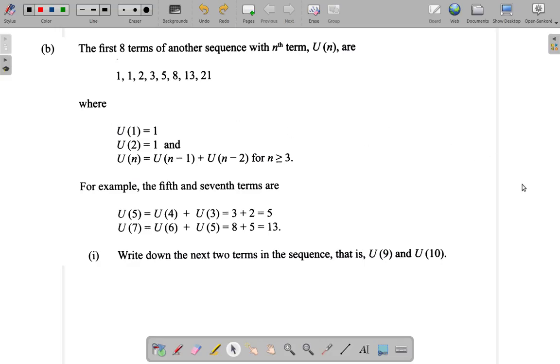Question 7B1. The first eight terms of another sequence with nth term U(n) are: 1, 1, 2, 3, 5, 8, 13, 21.